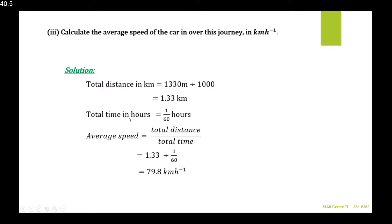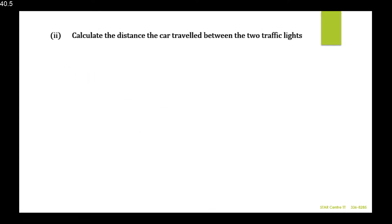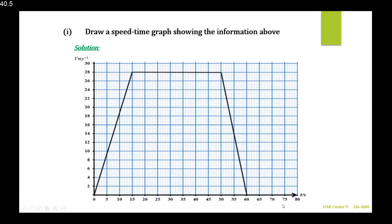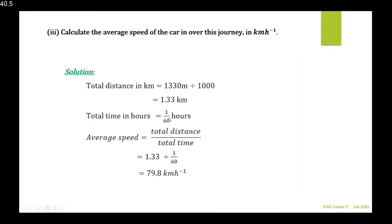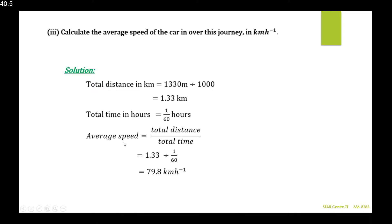The total time on the x-axis was in seconds. 60 seconds is 1 minute, which as a fraction of an hour is 1/60. Average speed equals total distance divided by total time: 1.33 ÷ (1/60) = 79.8 kilometers per hour.